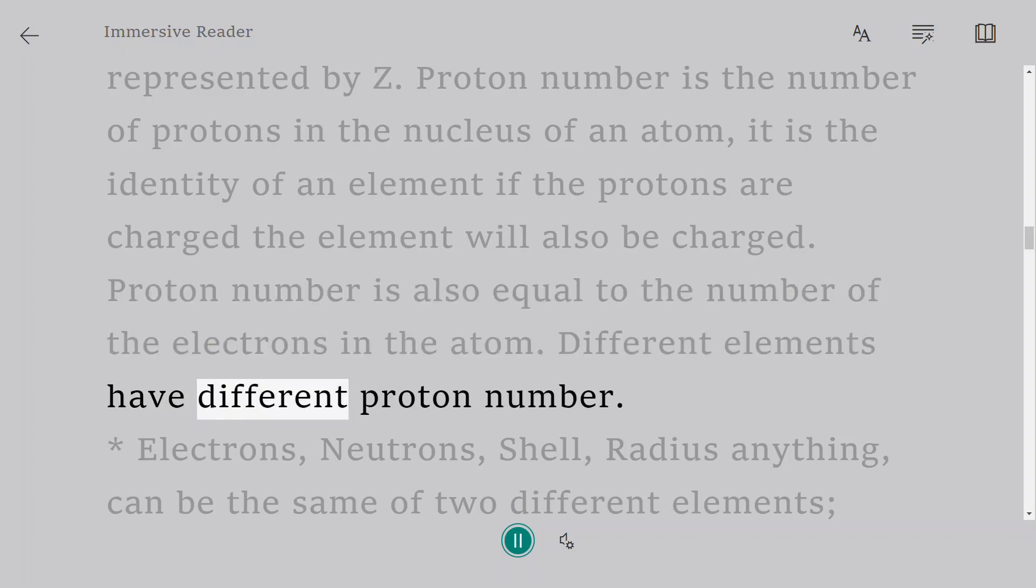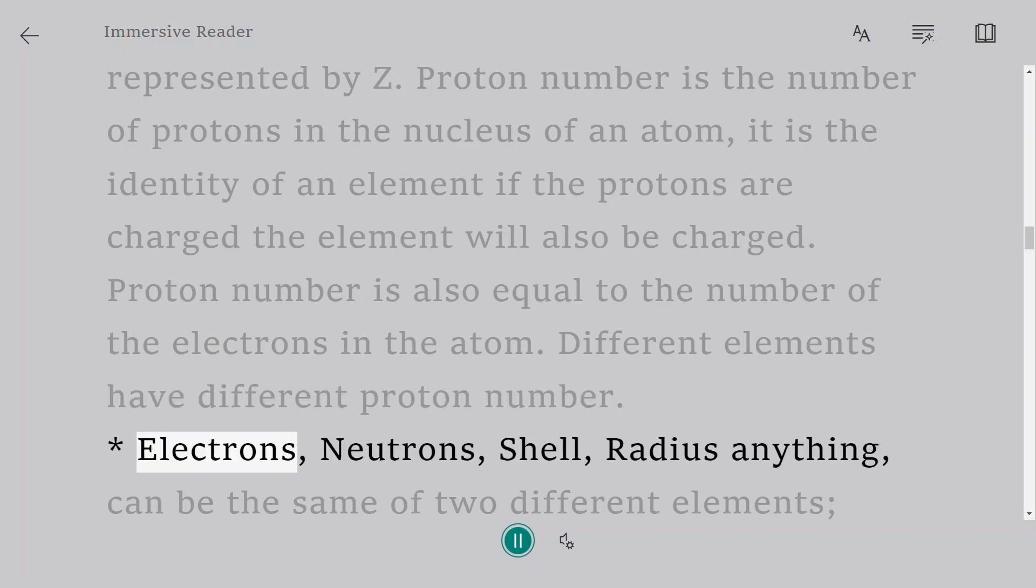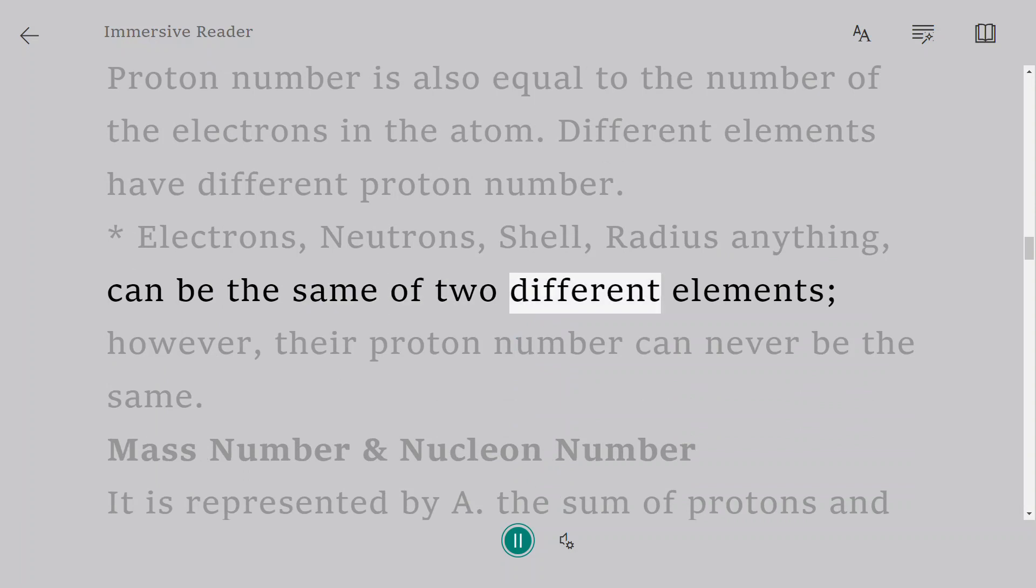Different elements have different proton numbers. Electrons, neutrons, shell, radius—anything can be the same for two different elements; however, their proton number can never be the same.